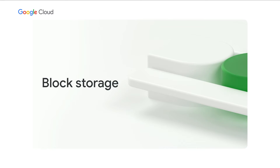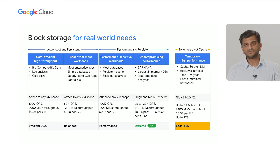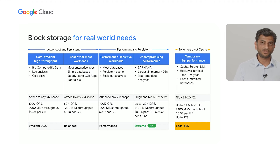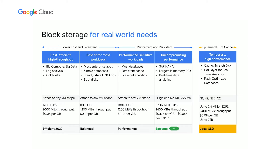Moving on to block storage — again, a simple set of choices. At the left you are optimized for cost: we call it the persistent disk efficient category, which will be released next year. In the middle, for a balance of price and performance, we have PD Balanced. And as you go to the right, you have more performance-intensive options: PD Performance and PD Extreme. PD Extreme, for example, would be used for the highest-end SAP HANA databases, delivering up to 1,200K IOPS.